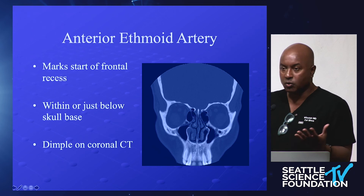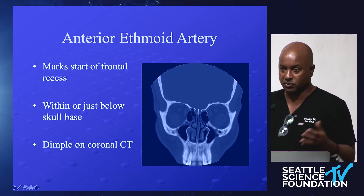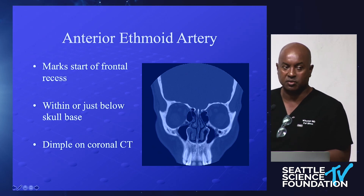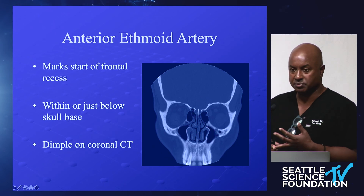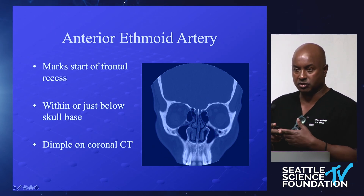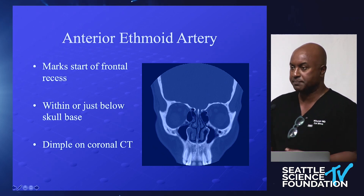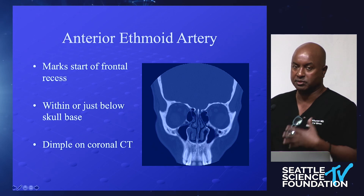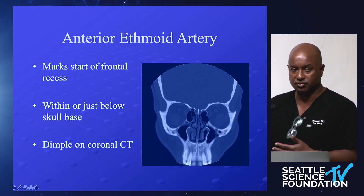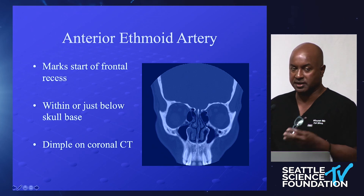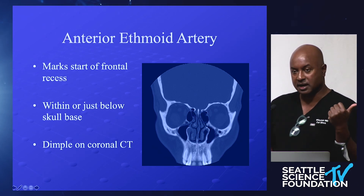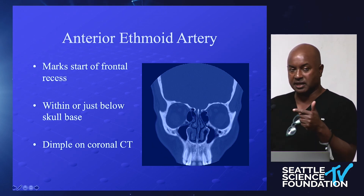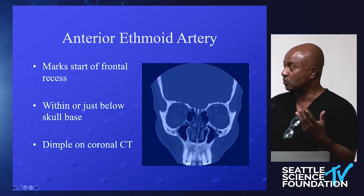The anterior ethmoid artery is something we all worry about. Identify it preoperatively in its relationship to the medial orbital wall, skull base, and cribriform plate — you've got a roadmap. If you don't find your anterior ethmoid artery before dissecting, you're asking for trouble. It's the one region where you can get three complications with one bite: bite the anterior ethmoid artery and you can simultaneously get an orbital bleed, an intracranial bleed, and a CSF leak — all three with one instrument.